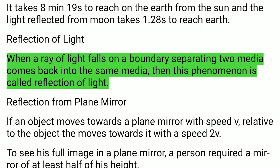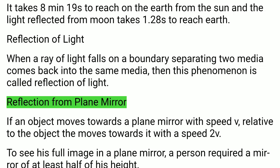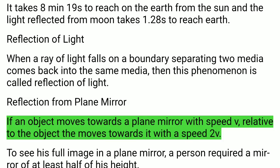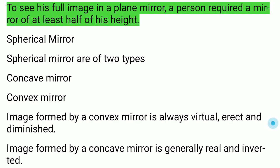Reflection of Light: When a ray of light falls on a boundary separating two media and comes back into the same medium, this phenomenon is called reflection. If an object moves towards a plane mirror with speed V, the image moves towards the object with speed 2V. To see his full image in a plane mirror, a person requires a mirror of at least half his height.